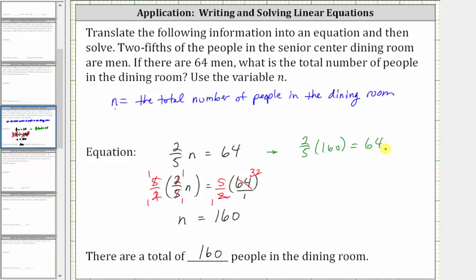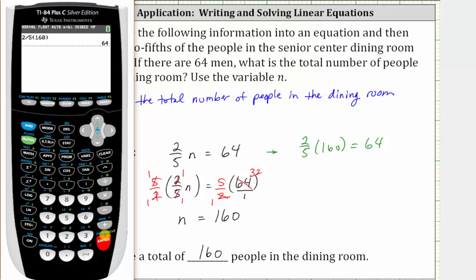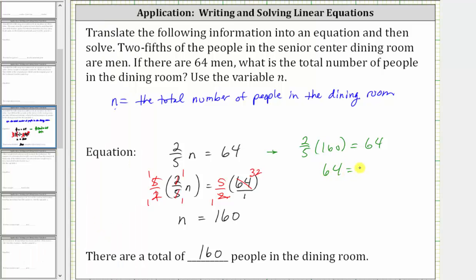And let's check the product on the left on the calculator. Two-fifths times 160 is 64. 64 equals 64 is true, verifying the solution is correct.